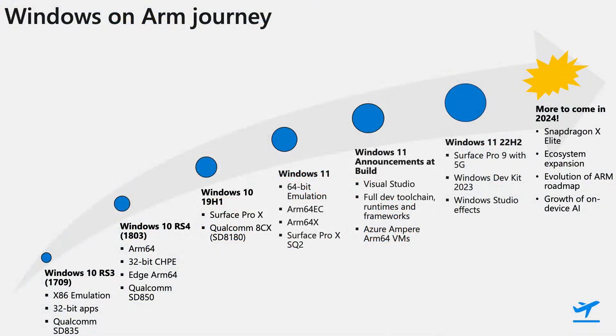Microsoft believes silicon diversity is very key to providing amazing experiences for all users. Windows has been heavily investing in ARM for many years, adding new features with every release since RS3. Some significant initial milestones include adding 32-bit emulation in RS3, ARM native Edge, and the launch of Surface Pro X SQ1 in 2019. The Windows 11 release in 2021 was a pivotal moment, introducing features like 64-bit emulation, ARM64 EC, and ARM64X. 64-bit emulation opened up the possibility of running a wider set of unmodified 64-bit x86-based applications on ARM devices.